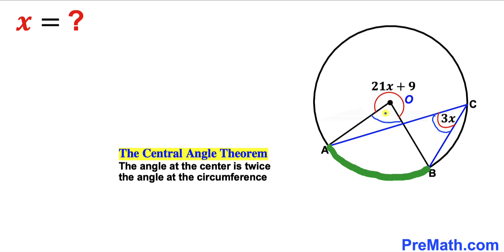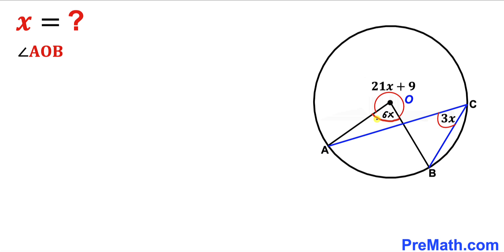So 2 times 3x is going to give us 6x. Therefore our angle AOB is going to be 6 times x.